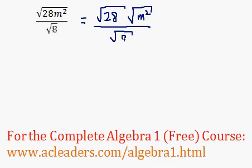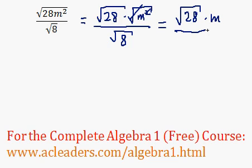So we have everything over root 8, and of course what I did here is that I just broke down the root 28m squared into root 28 times root m squared. What will that do? Here we have root 28. The root of m squared is just m all over root 8.